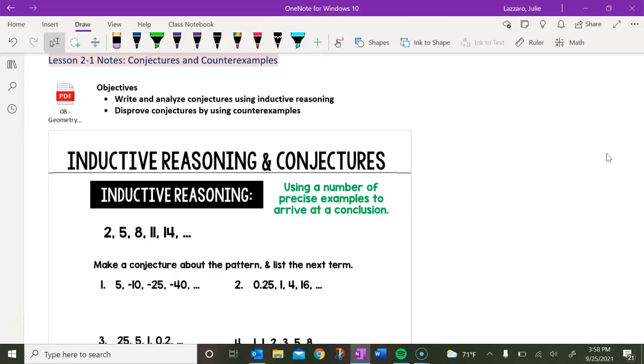Today's objectives are to write and analyze conjectures by using inductive reasoning, and to disprove conjectures by using counterexamples. So my first question for you is, what is a conjecture? You might have heard this word in previous math classes or in science classes. A conjecture is something that you suspect is true. So you've drawn a conclusion, you think that it's true, but you're not 100% sure. You haven't proven it yet.